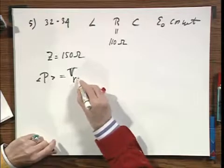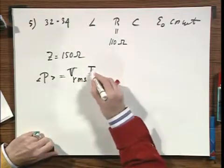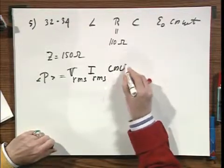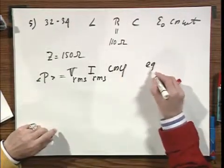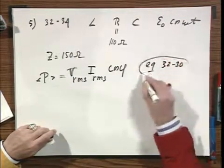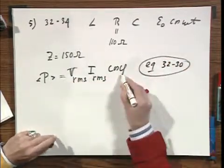the mean value equals the voltage RMS times the current RMS times the cosine of that angle phi the way I defined that before. And I will refer you to equation 32-30 without any further elaborating on why this is so.